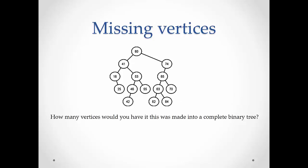In our first example, it was not a complete binary tree — there are missing vertices. For example, looking at the right child of the root labeled 74, 74 does not have a right child, so an entire right subtree of 74 is missing. How many vertices would we have if this were a complete binary tree? We would have to extend until all paths have length one, two, three, four — so five levels. Two to the fifth minus one would be thirty-one. We only have fourteen, so almost half of the vertices are missing.